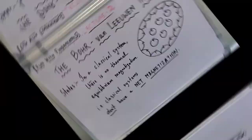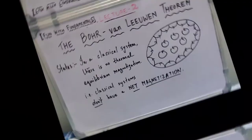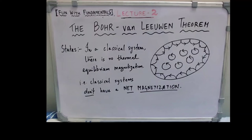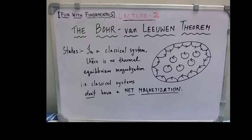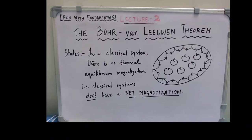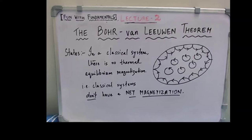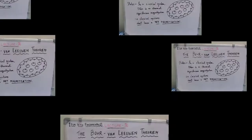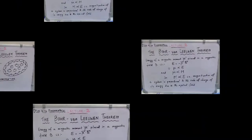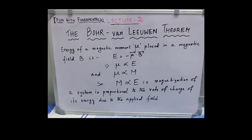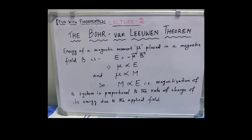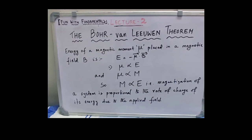Now let us study the Bohr-van Leeuwen theorem. It is a classical theorem that states that in a classical system there is no thermal equilibrium magnetization — that is, a classical system should not have any net magnetization. As we shall see, this statement is completely wrong, and thus it gives rise to the need for quantum mechanics to explain magnetization in a magnetic material. Consider a magnetic moment mu placed in a magnetic field B; its energy is minus mu dot B. Since mu is proportional to energy E, and mu is proportional to magnetization M, the magnetization of a system is proportional to the rate of change of its energy due to the applied field.